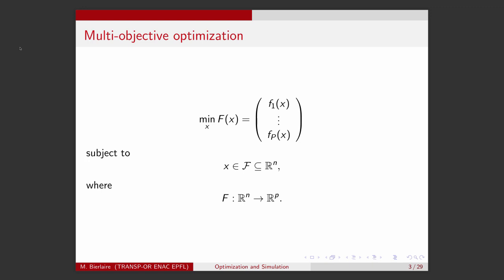We will write a multi-objective optimization problem by defining a vector capital F that contains all the capital P objectives that we are interested in. X is the vector of decision variables; it must belong to a feasible set, so these are the constraints. And the capital F takes X, the vector of R^n, as an input, and provides a vector of R^p, which is the vector of objectives that we are interested in.